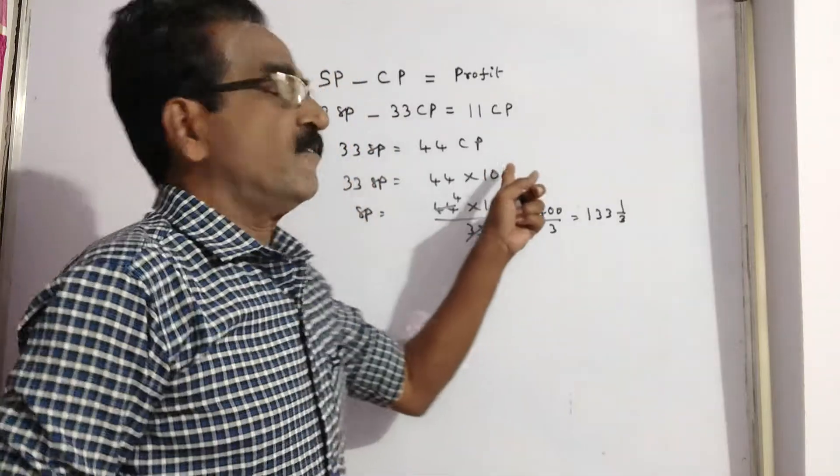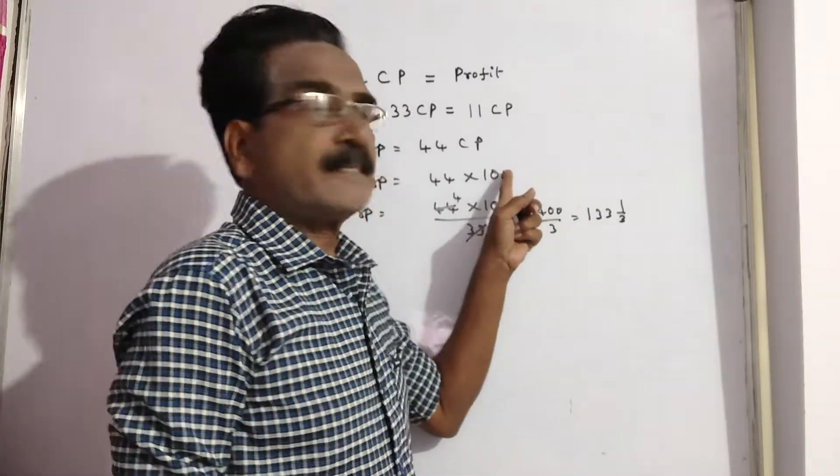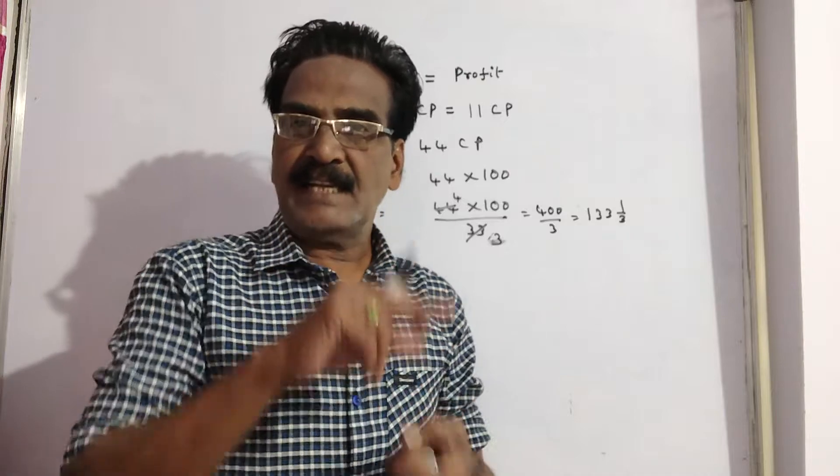So, if cost price is 100, sold price is 133, 1 by 3.